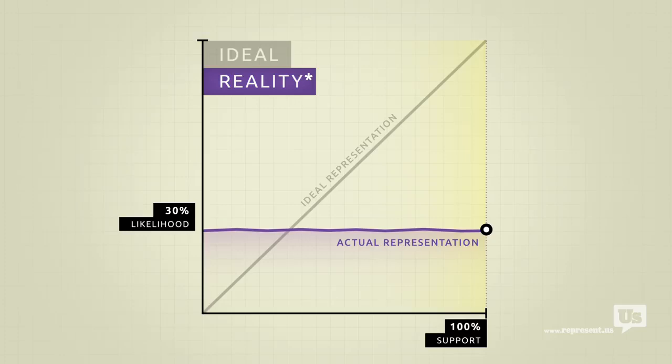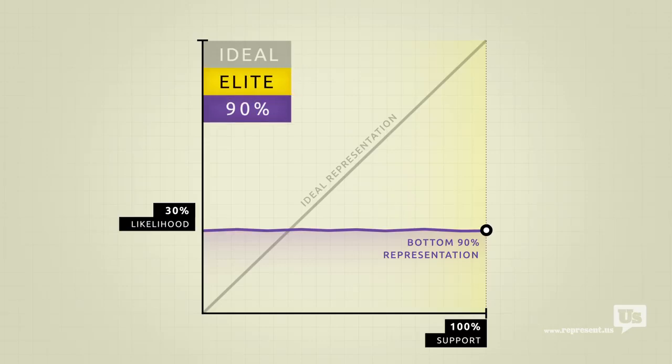But there's a catch. This flat line only accounts for the bottom 90% of income earners in America. Economic elites, business interests, people who can afford lobbyists, they get their own line.